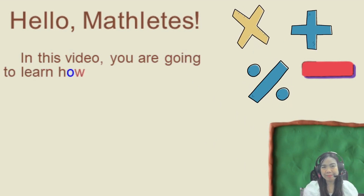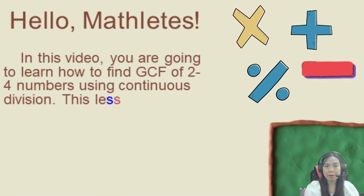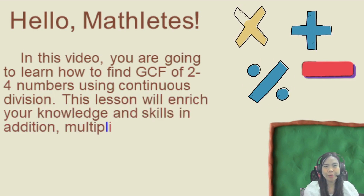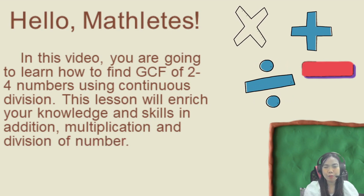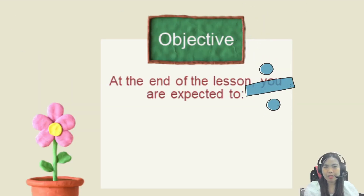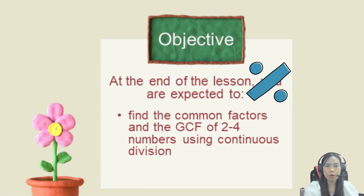Hello, Mathletes! In this video, you are going to learn how to find the greatest common factors of 2 to 4 numbers using continuous division. This lesson will enrich your knowledge and skills in addition, multiplication, and division of numbers. At the end of the lesson, you are expected to find the common factors and the greatest common factors of 2 to 4 numbers using continuous division.